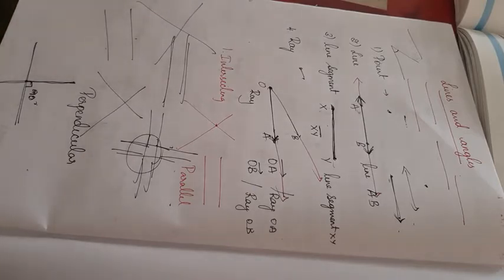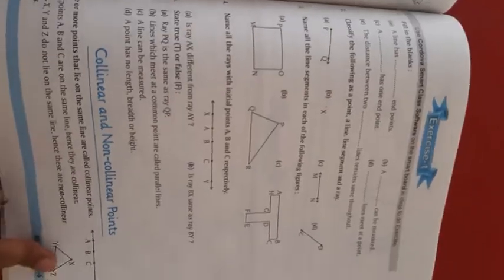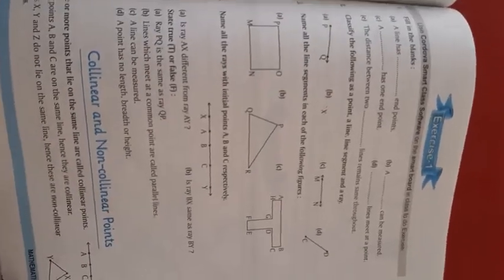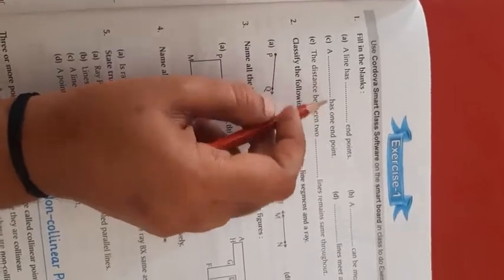So, can we do the exercise problems now? Take page number 119. You will write the answers in your textbook itself. Take page number 119 all of you. See the exercise — first one, fill in the blanks.